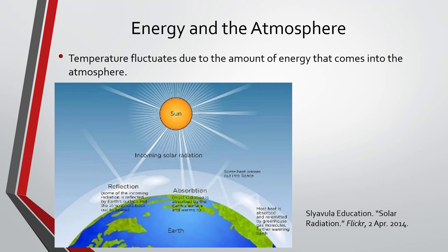Temperature fluctuates in the atmosphere due to the energy that comes in from the Sun. The average amount of energy coming in and going out has to be equal if we want the global temperature to remain the same. But if global temperature is increasing, that means more energy is coming in. But if more energy is going out, that means that the global temperature is going down.